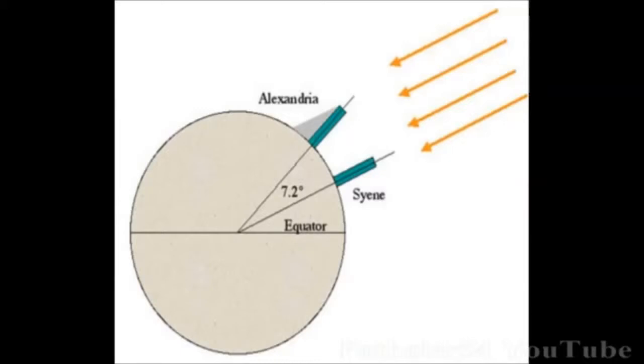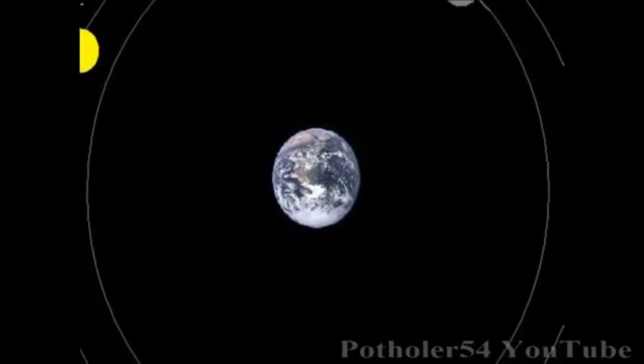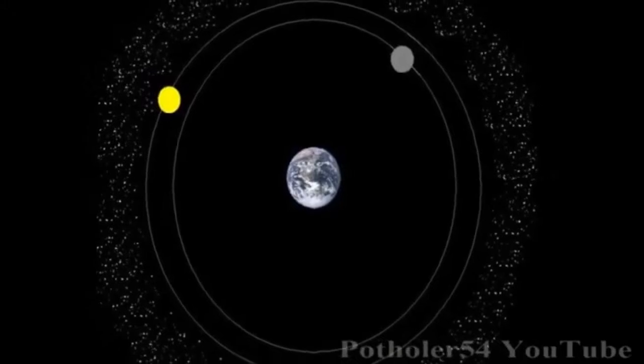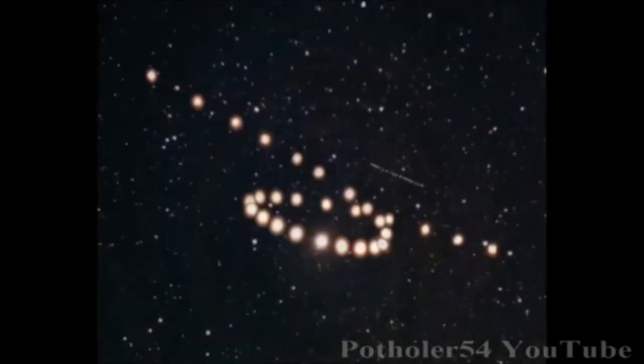But while the Earth might be spherical, the dogma of a fixed Earth still held sway, backed by a powerful church. Problem was, this didn't fit the observable evidence, especially the observation that some wandering stars, or planets in Greek, had very erratic orbits around the Earth.